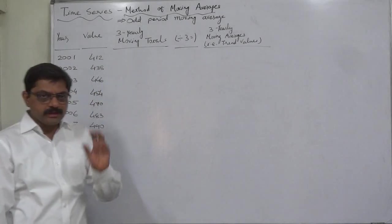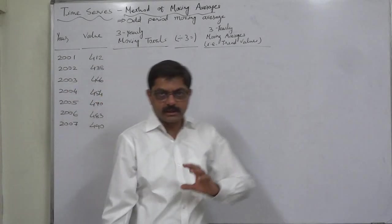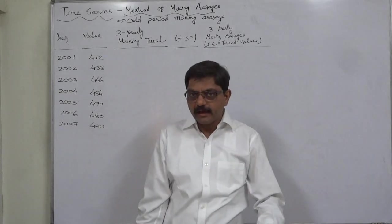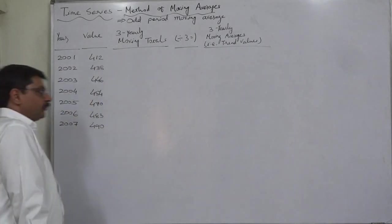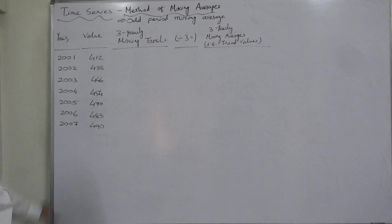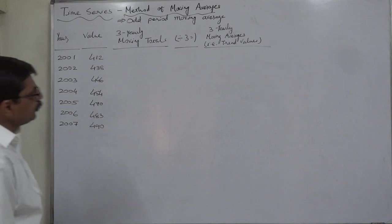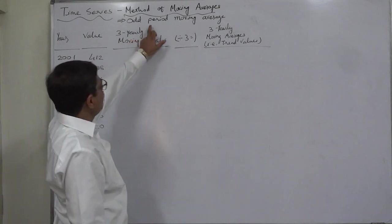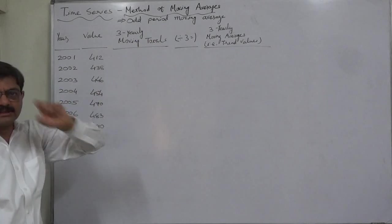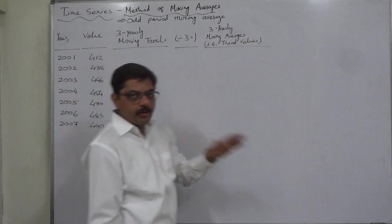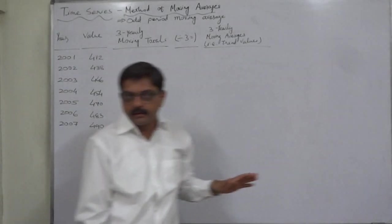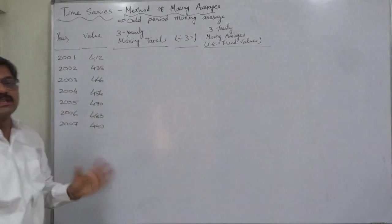We have a time series made up of seven years and respective values. First of all, to find out the moving averages, the period should be considered. At present I am not going to speak about how to determine the period. We have been asked to find the three yearly moving average for this time series.